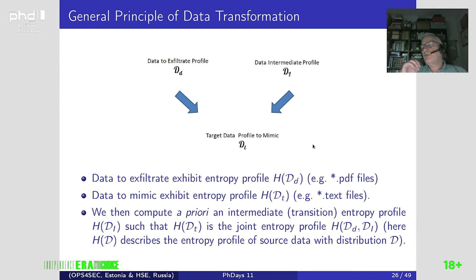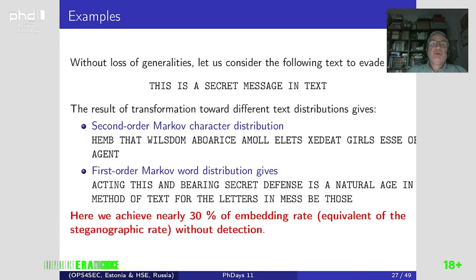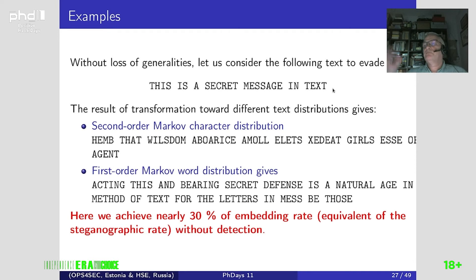For that, you have to consider an intermediate profile, and the combination of the two statistical profiles will enable creating documents following the target data profile. From a mathematical point of view, you have to consider what we call the joint entropy profile in order to combine them into the resulting target data profile. Any textbook on information theory will give you the basics about what a joint entropy profile is.